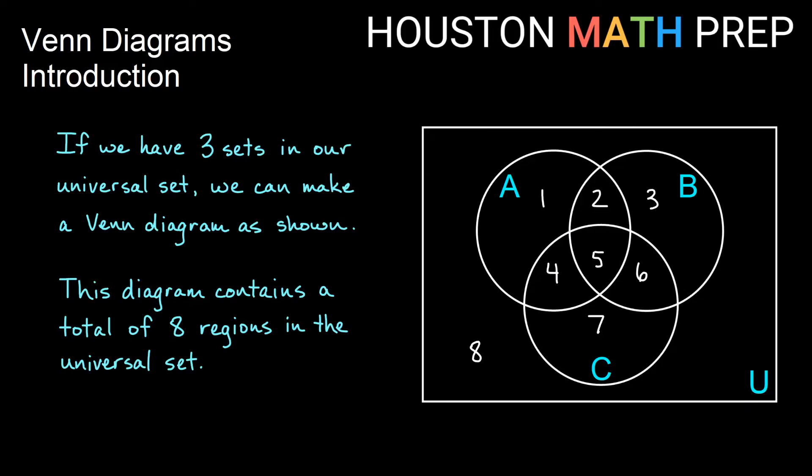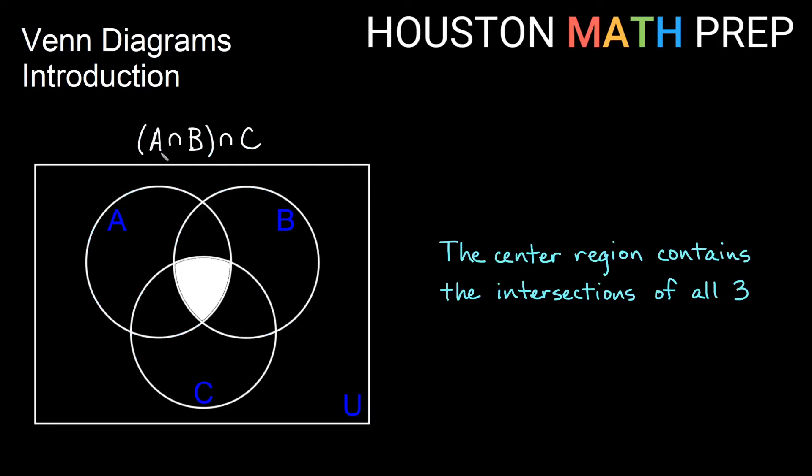And we can imagine some of these intersections. You'll notice there are many overlapping regions. So if we have A intersect B and intersect C, where they all intersect, that's going to be the exact center. That's the region that's in all three circles. It's in A, in B, and in the C circle as well. So this center point will be the intersection of all three.